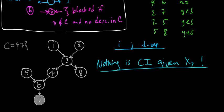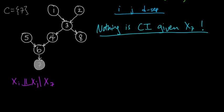We can just immediately read that off: no pair is conditionally independent given x7. That was interesting. So let's do another one — let's redraw this and condition on something else.